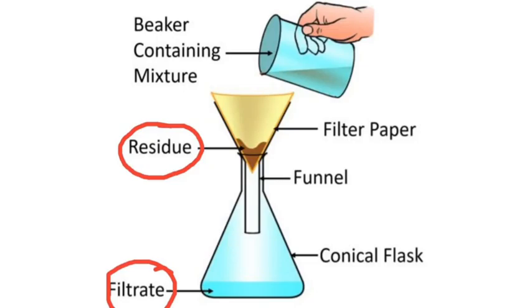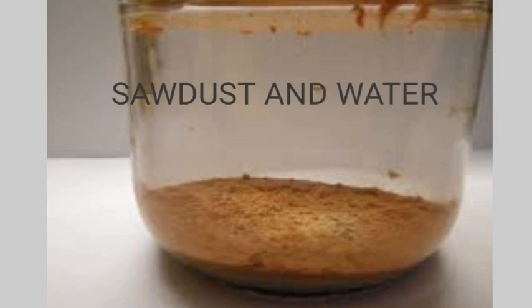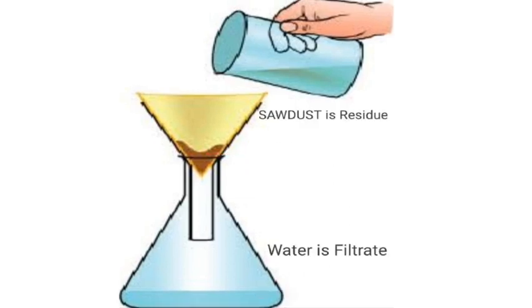We take the example of sawdust and water. Sawdust is formed when we cut wood with a saw, and it is very light in weight so it doesn't settle down completely — it remains scattered in the liquid. To separate sawdust and water, we allow the mixture to pass through a filter paper fixed in a funnel, which can be placed on a tripod stand or iron stand. After some time, sawdust settles on the filter paper as residue, and the clear water passes through as filtrate, which is collected in a beaker.